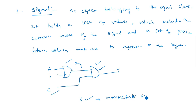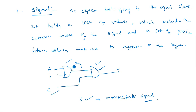If multiple signals are there, X can be treated as a range bit vector. So the signal holds the present value as well as the future value depending on the input values C and B.